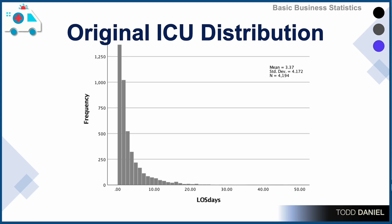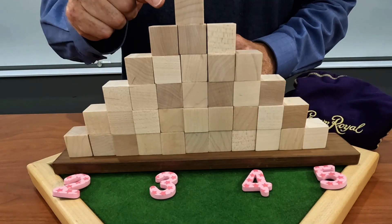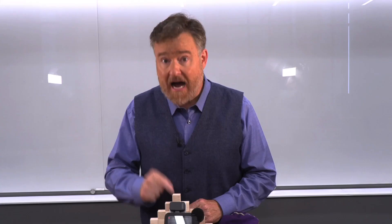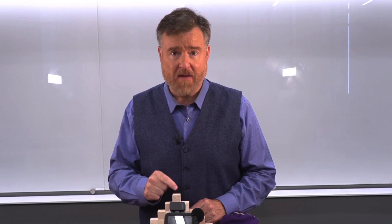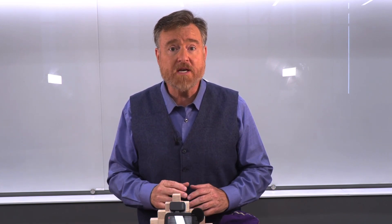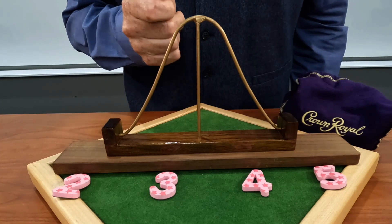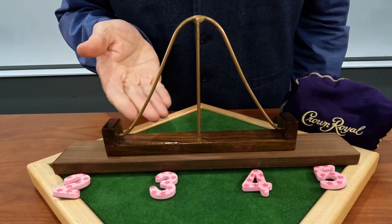That is a highly positively skewed distribution. The population does not look anything like a normal curve.